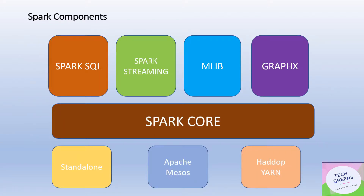Let's see what the different components of Spark are. Spark consists of a major component called Spark Core, which contains the majority of the libraries. On top of Spark Core there are four different components: Spark SQL, which provides an SQL-like interface for data processing; Spark Streaming, which provides support for stream data processing; MLlib, which provides libraries for machine learning, statistical and dynamic analysis of data.